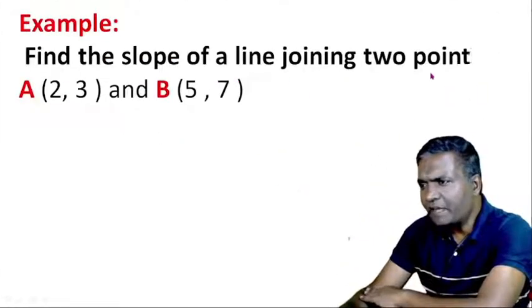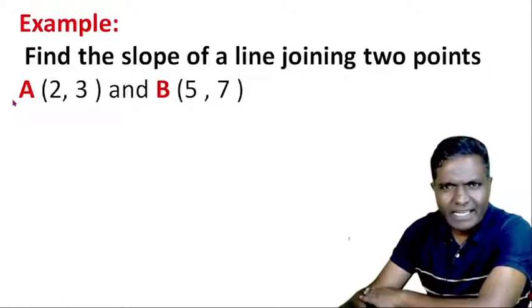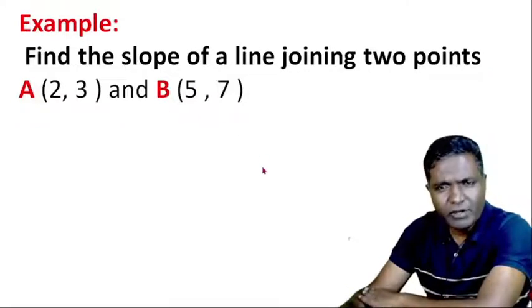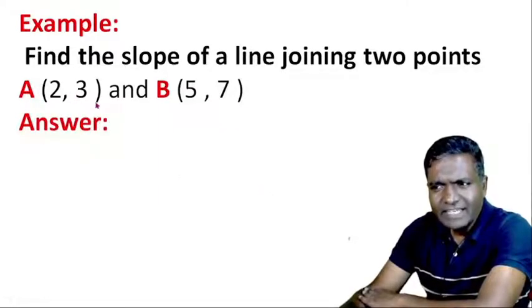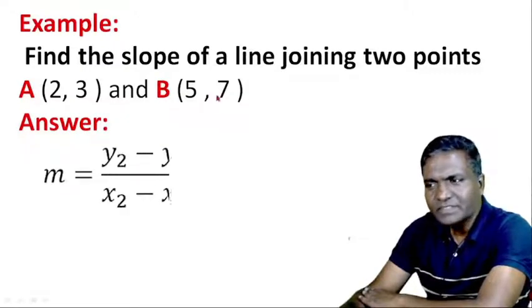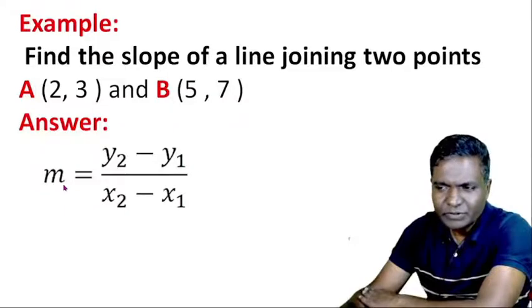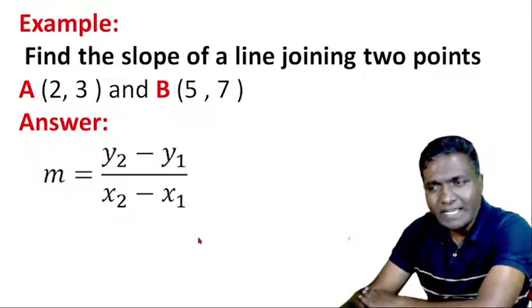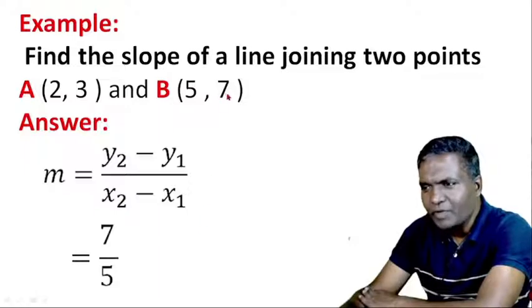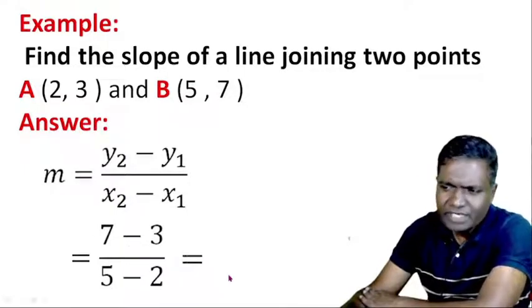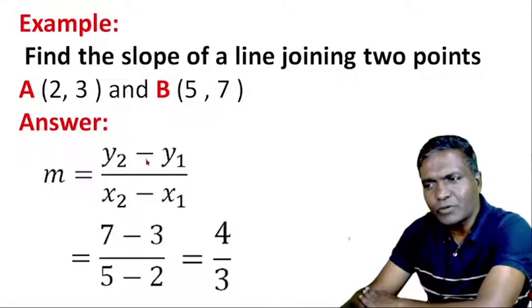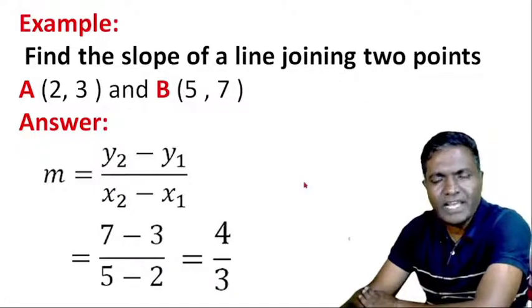Let's look at an example. Find the slope of a line joining two points A(2, 3) and B(5, 7). Here x1 = 2, y1 = 3, x2 = 5, y2 = 7. Slope m = (y2 - y1) / (x2 - x1) = (7 - 3) / (5 - 2) = 4 / 3. So 4/3 is the slope of the line joining points A and B.